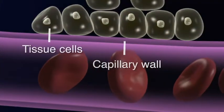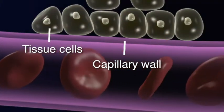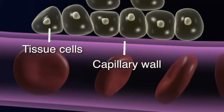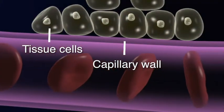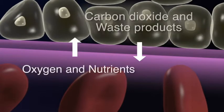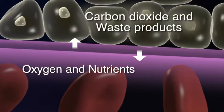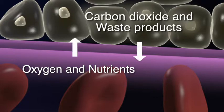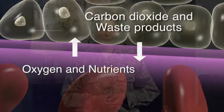Capillaries play an important role in the circulatory system since they're responsible for providing oxygen and nutrients to the tissues and for picking up the carbon dioxide and waste products. Much of this waste is then filtered out of the blood through the liver and kidneys.